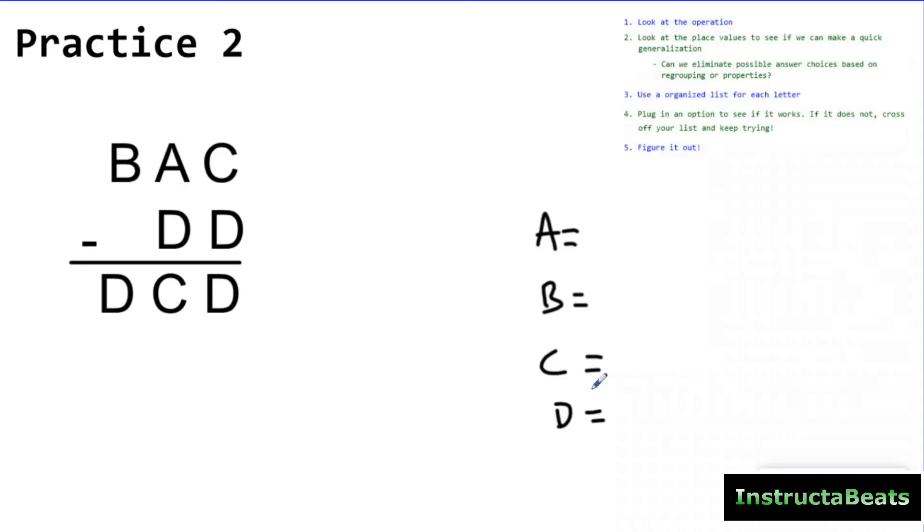And we know that I'm trying to find a digit. So my only digits that A, B, C, and D could be are zero through nine. But I don't want to make that organized list yet. I want to look at the operation, which is subtraction. And I want to look at my place values and see, is there any generalizations that I can make looking at this? Well, I already know right here that I had to have regrouped because if I didn't regroup, B minus zero would have been B. So I know that when I regrouped here, I was left with a D. So this is a kind of a higher level thinking process, but I know that B minus one is going to equal D.